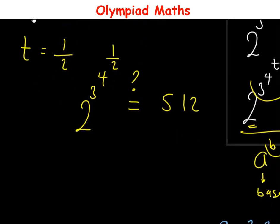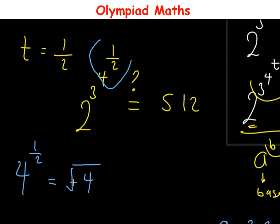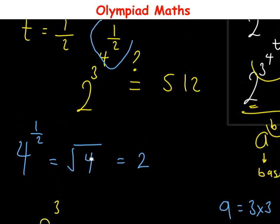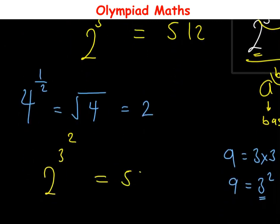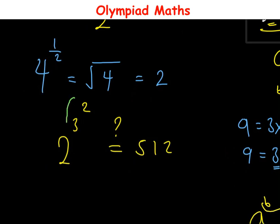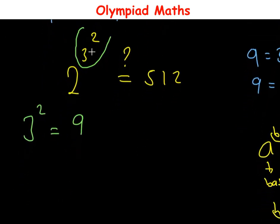To simplify, we start with the innermost powers: 4 raised to power 1 over 2. Now 4 raised to power 1 over 2 can be written as the square root of 4, and the square root of 4 is equal to 2. So 4 raised to power 1 over 2 equals 2. This becomes 2 raised to power 3 raised to power 2. The next step is to simplify 3 raised to power 2, which equals 9.